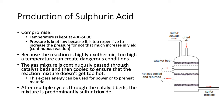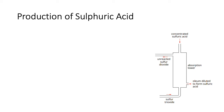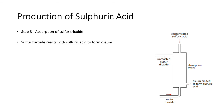After multiple cycles through the catalyst beds, the mixture is predominantly sulfur trioxide — mostly SO3 with a little bit of sulfur dioxide. This sulfur trioxide is then pumped into an absorption tower — step three: absorption. The sulfur trioxide reacts with sulfuric acid to form oleum, which is H2S2O7.